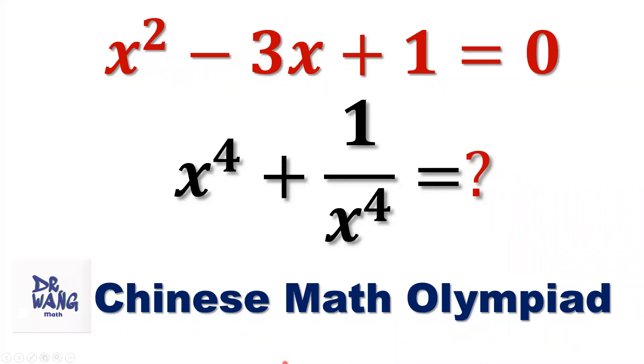Hello, everyone. I'm Dr. N. Here is the question: x squared minus 3x plus 1 equals 0. What is the value of x to the power of 4 plus 1 over x to the power of 4?